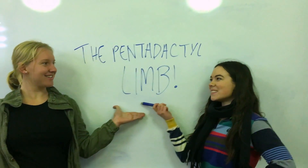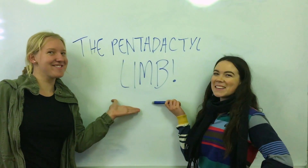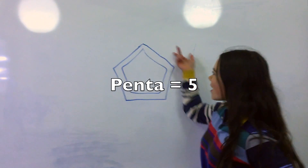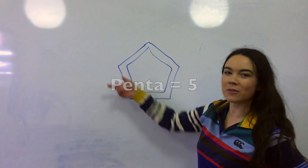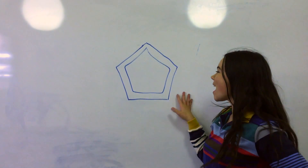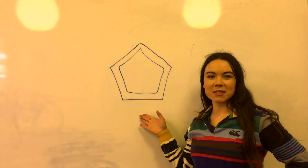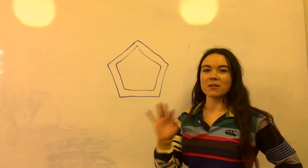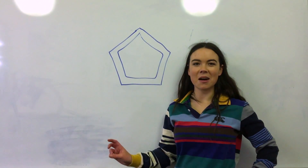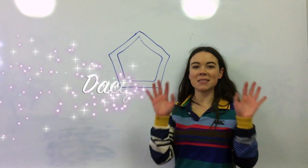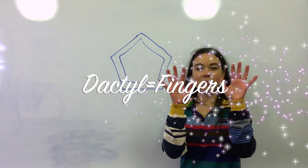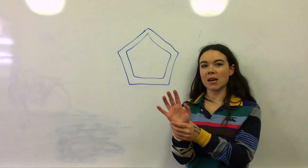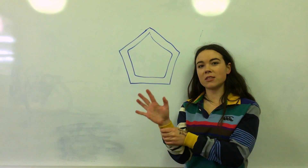The pentadactyl limb. As you can see, it has five sides, or five, and this is why the pentadactyl limb is called what it is, because it has five components. Dactyl means fingers, which also links to the pentadactyl limb, which has five digits.